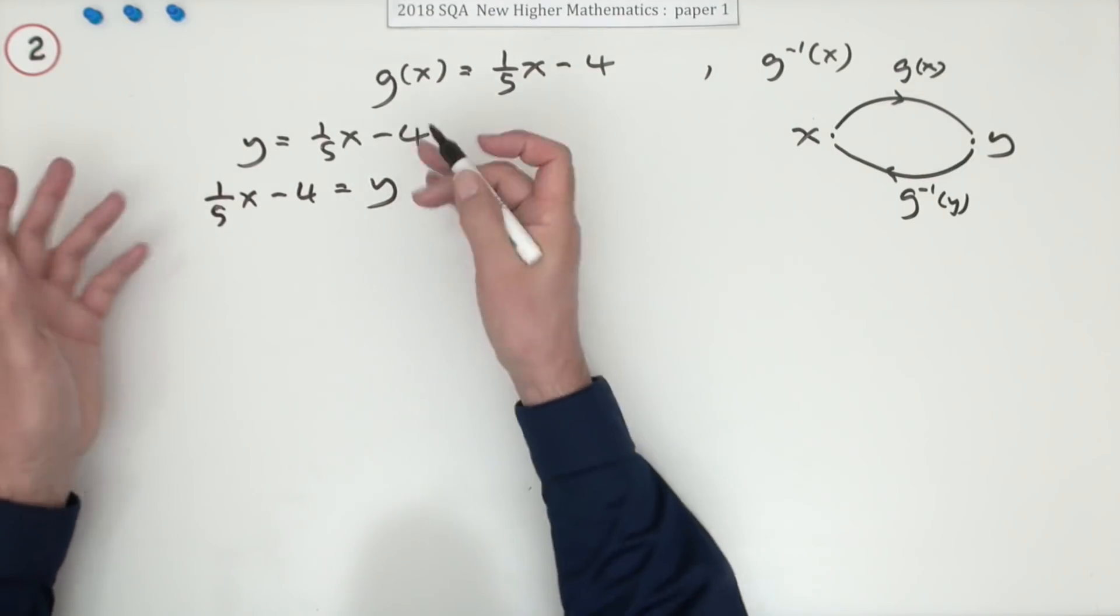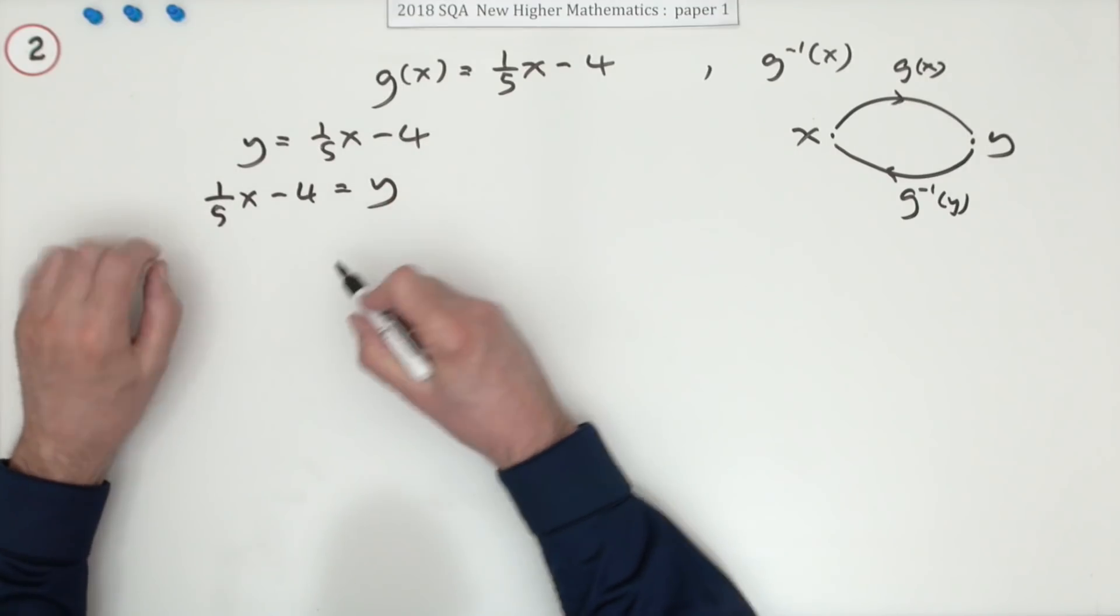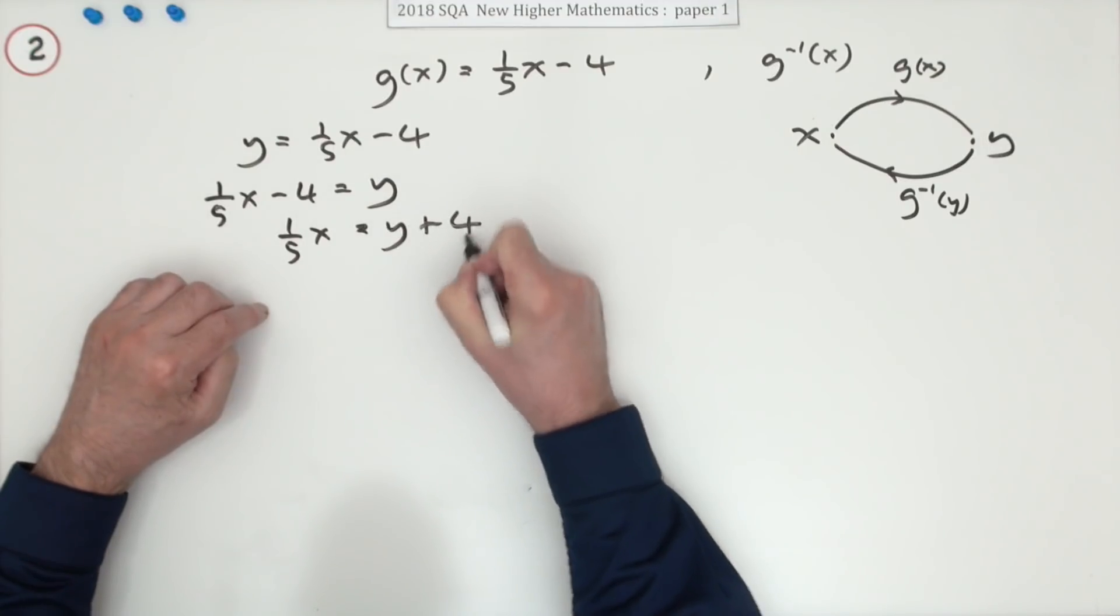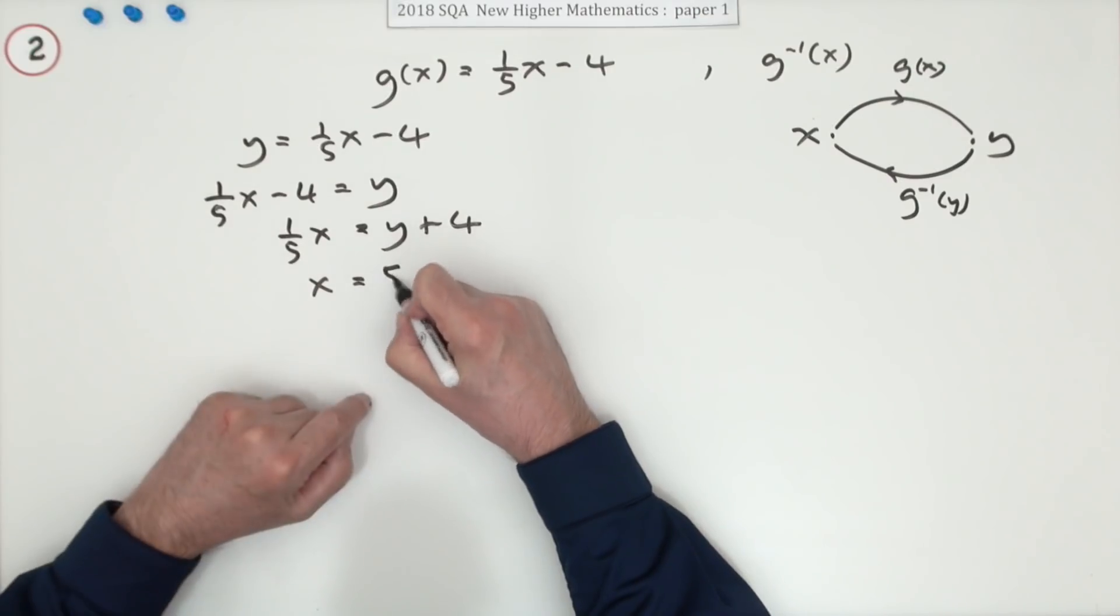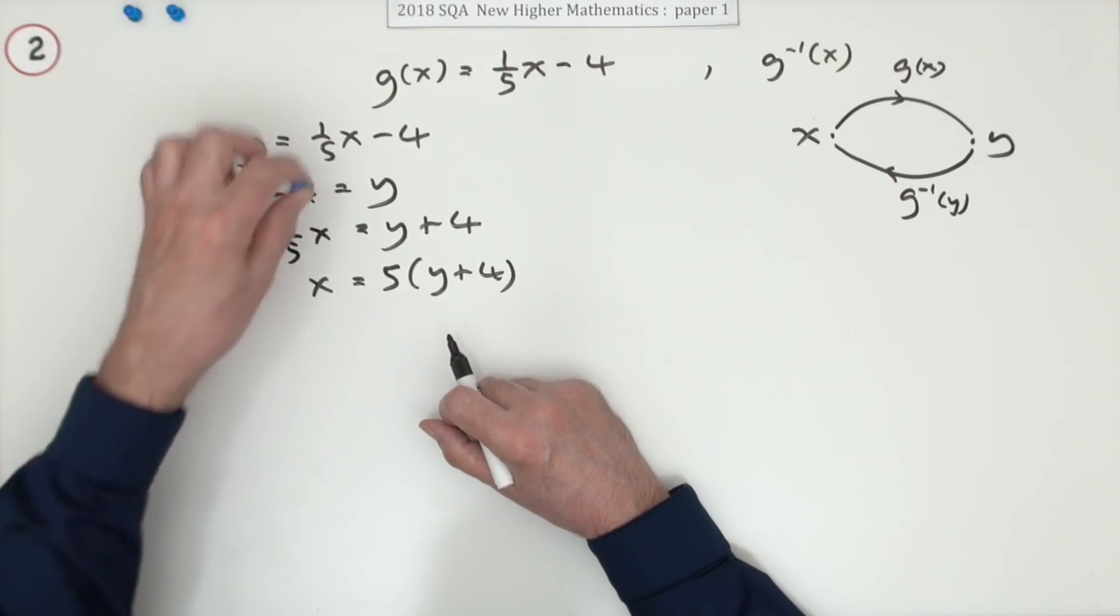Not actually done anything yet so there's no marks yet. The first mark comes when you start to fiddle about a bit. So a fifth of x would equal y plus four, but then there's not much after that to finish it off. The five goes across and multiplies: five times (y plus four), and that's where the first two marks are.